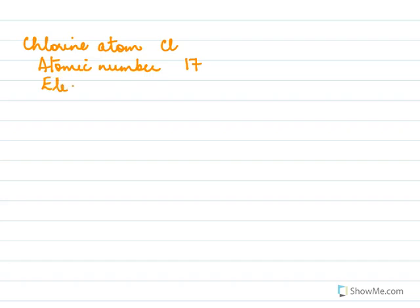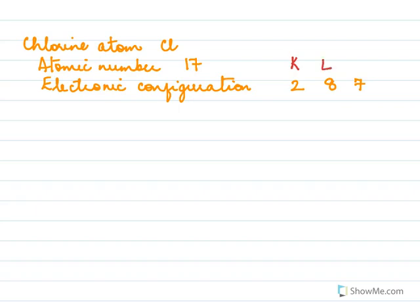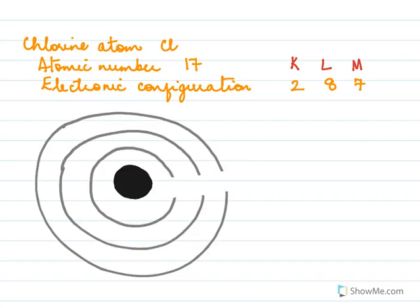The electronic configuration of chlorine is 2, 8, 7 — that is 2 plus 8 equals 10, and 10 plus 7 equals 17. So you have in the K shell 2 electrons, the L shell 8 electrons, and the M shell 7 electrons. Here is the chlorine atom with three shells: K, L, and M.